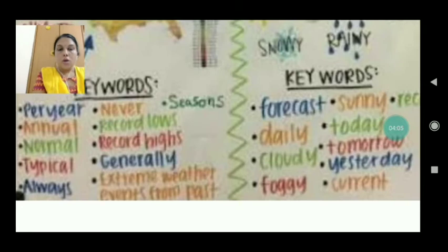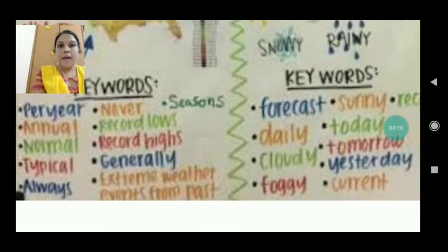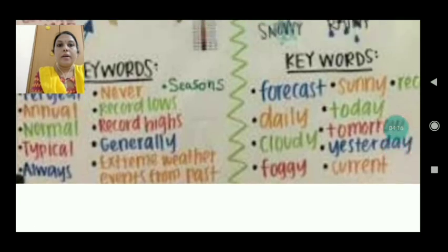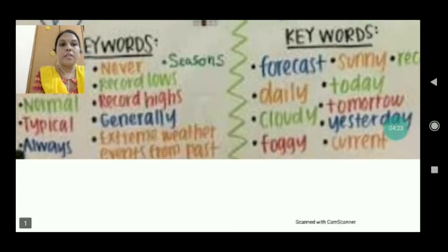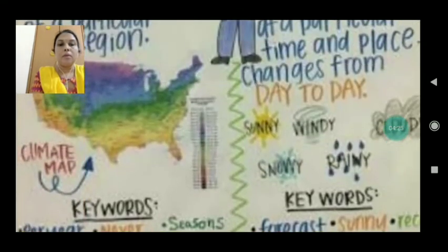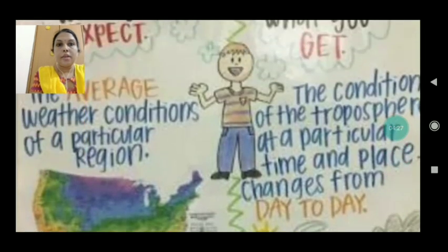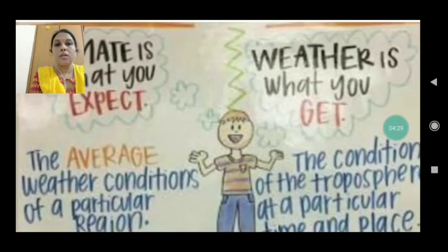These are the keywords for weather and climate. For climate: per year, annual, records, normal records, high, typical, generally, always, extreme weather, export from the past. For weather: forecast, sunny, daily, today, cloudy, tomorrow, yesterday, foggy, current, etc. These are some points to summarize what is climate and what is weather.